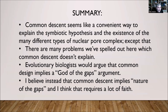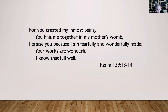In summary, common descent seems like a convenient way to explain the symbiotic hypothesis and the existence of the many different types of nuclear pore complex, except that there are many problems which common descent does not explain. Evolutionary biologists would argue that common design implies a god-of-the-gaps argument, but I believe instead that common descent implies 'nature of the gaps,' since there are so many things we don't understand, and I think that requires a lot of faith on the part of the atheist. I close with this quotation from Psalm 139: 'For you created my inmost being; you knit me together in my mother's womb. I praise you because I am fearfully and wonderfully made. Your works are wonderful. I know that full well.' That concludes my presentation, and I'll be happy to take any questions.